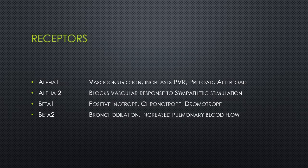Many of our common cardiac medications work by either stimulating or suppressing alpha and beta receptors. Alpha-1 causes vasoconstriction and an increase in blood pressure. Alpha-2 blocks the action of alpha-1. Beta-1 increases the rate, force, and automaticity of the heart, increasing blood pressure, while beta-2 has its actions in the lungs, promoting bronchodilation and increased blood flow.